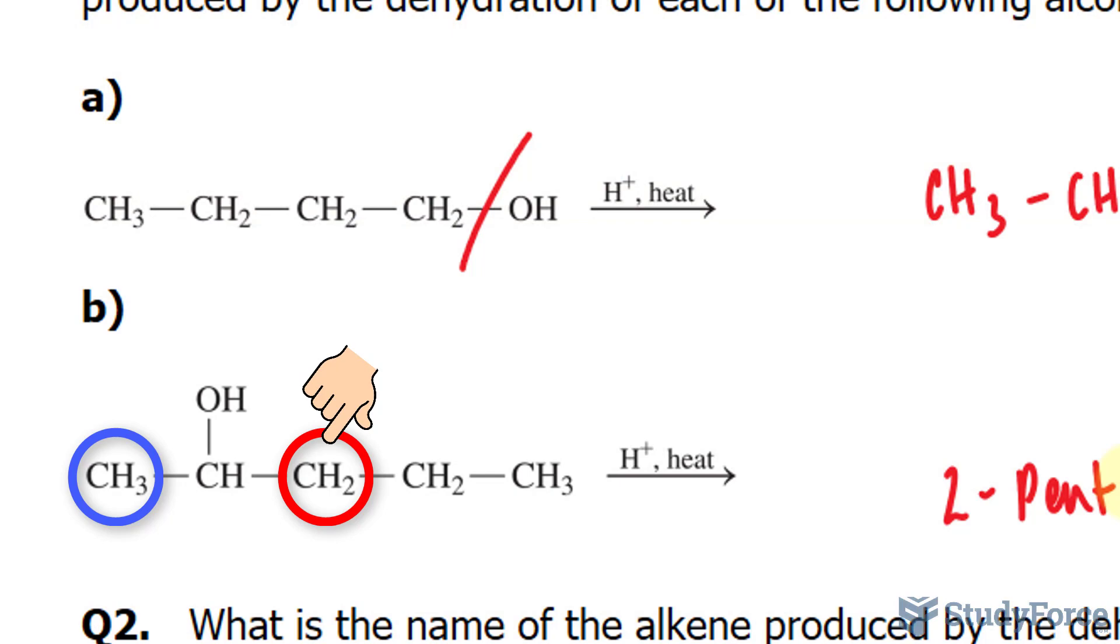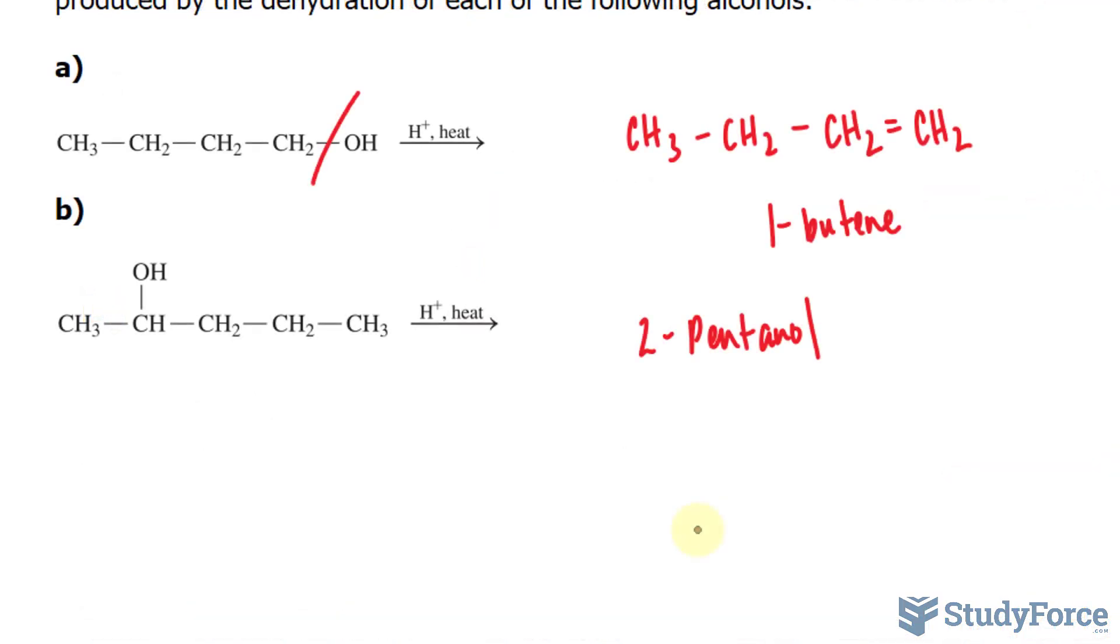Looking at what we have here, we'll be removing the OH from carbon 2 and the H from carbon 3, which has the smaller number of hydrogen atoms. The major product is 2-pentene. So the predominant product will have the double bond right here, where we have CH3-CH double bonded to another CH-CH2 and finally CH3. That's the majority of the product, and we have 2-pentene right here.